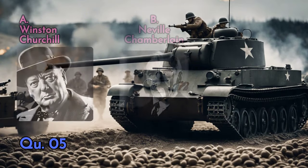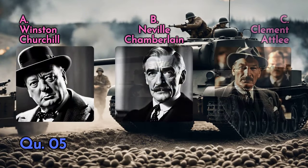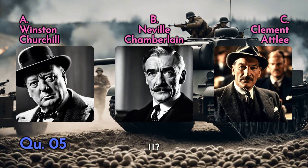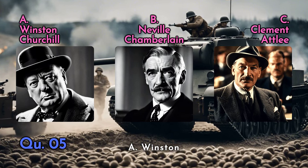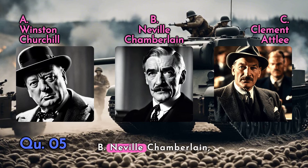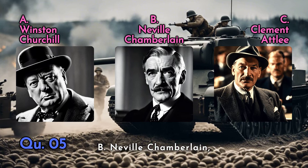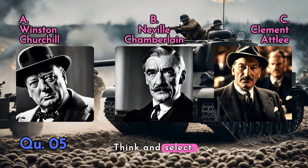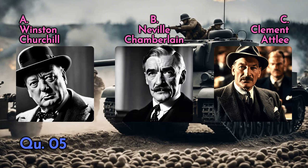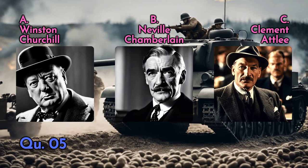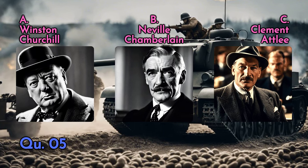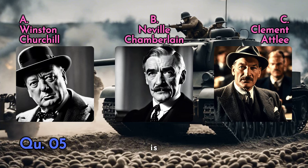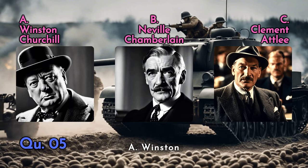Question five: who was the British Prime Minister during World War II? A — Winston Churchill, B — Neville Chamberlain, C — Clement Attlee. Think and select. And the answer is A — Winston Churchill.